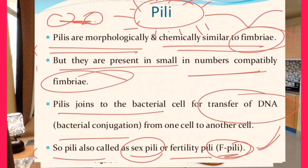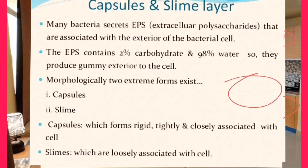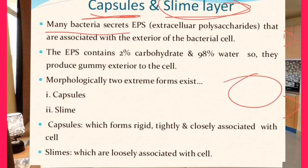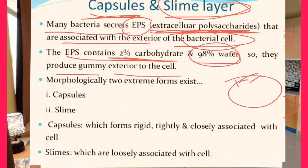Now we are coming to another part of the bacterial cell — capsules and slime layers. Most bacteria have capsules and some bacteria have slime layers. Many bacteria secrete EPS — extracellular polysaccharide — which is associated with the exterior of the bacterial cell wall, forming a covering. EPS contains 2% carbohydrate and 98% water, producing a mucus-type structure around the cell wall.